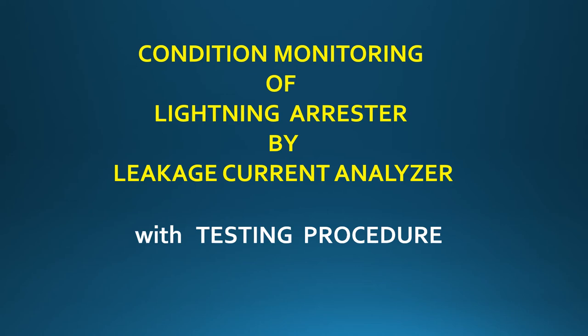Today I shall discuss condition monitoring of a lightning arrester by leakage current analyzer. This is one kind of test to check the health condition of a lightning arrester used in a substation. I will also discuss the testing procedure.